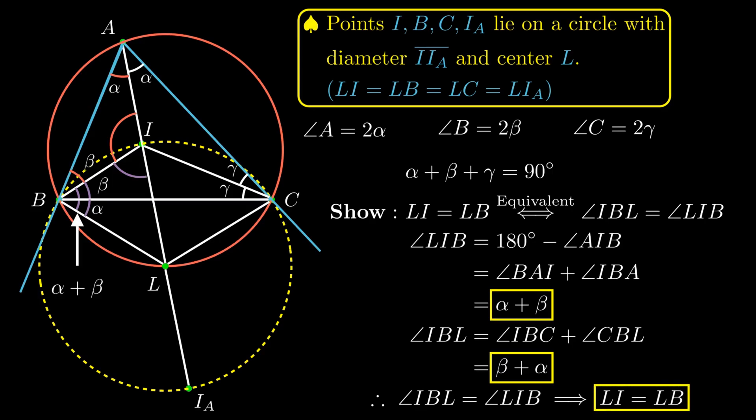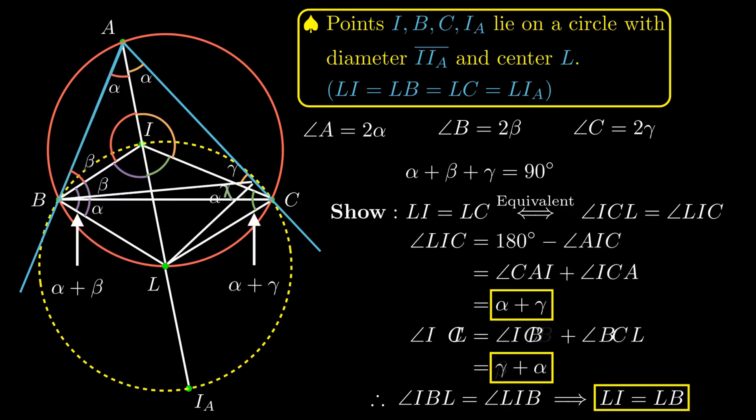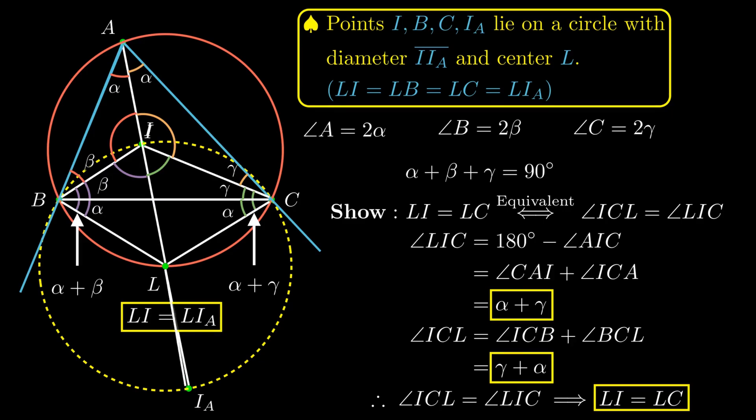And as I said earlier, by a similar argument it can be shown in the same way that the lengths LI and LC are equal. And then the lengths LI and LI sub A is actually given by the fact that I sub A is the reflection of I over L.